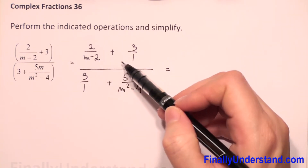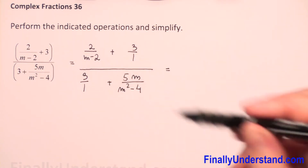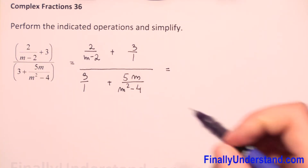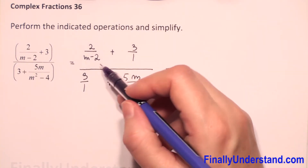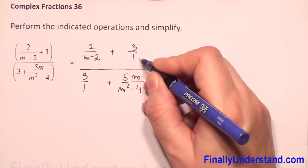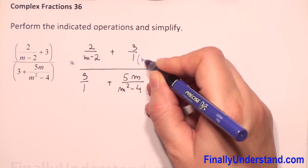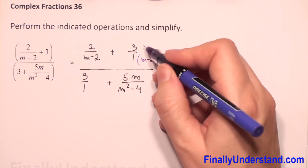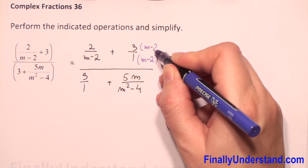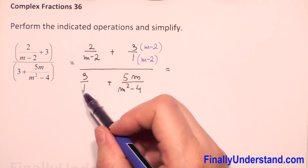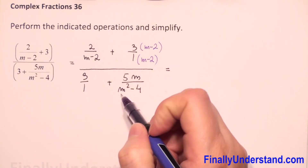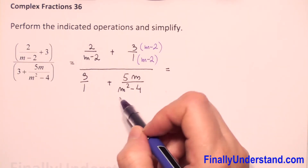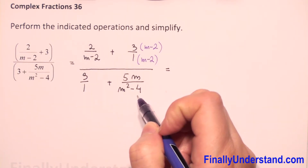To add two fractions we need to have the same denominator. In the denominator we have (m minus 2) and 1, so the common denominator will be (m minus 2). I need to multiply 1 times (m minus 2). Whatever I did with the denominator I have to do the same with the numerator. In the numerator we have (m squared minus 4), so the common denominator for 1 and (m squared minus 4) will be (m squared minus 4).